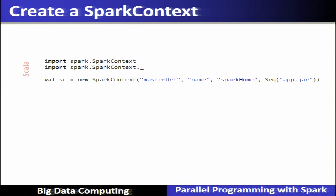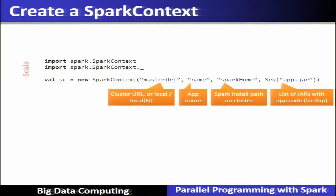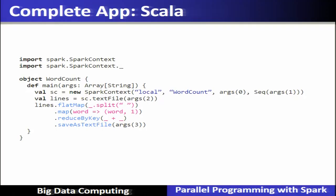To create a SparkContext, it takes different arguments: the master URL (local or local[n] for n threads), the application name, the Spark home path on the cluster, and a list of jar files. Here is the complete word count program shown, with the application name 'local' and 'wordCount', with arguments specified.